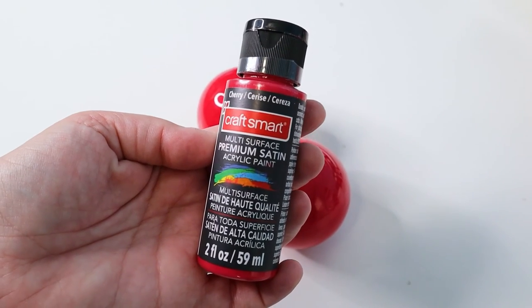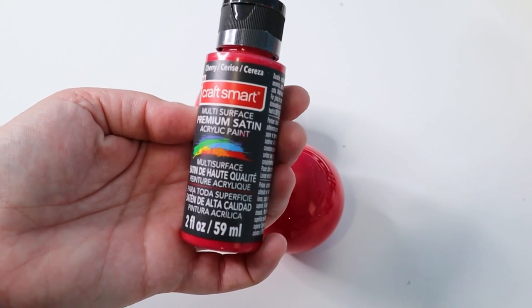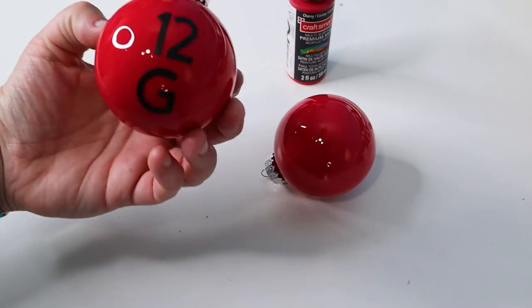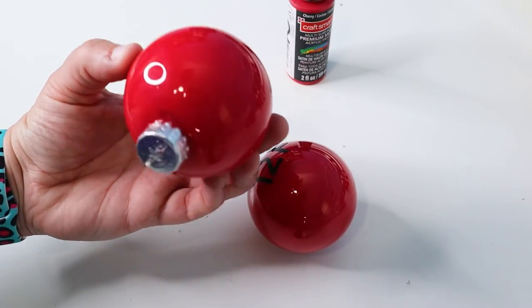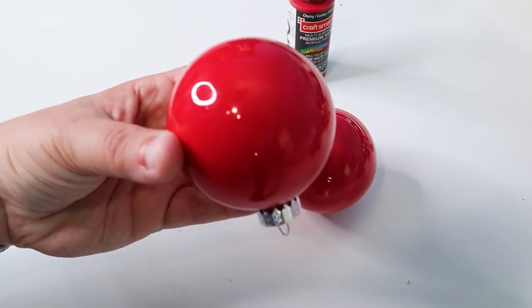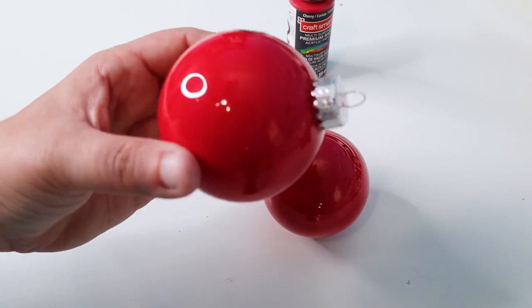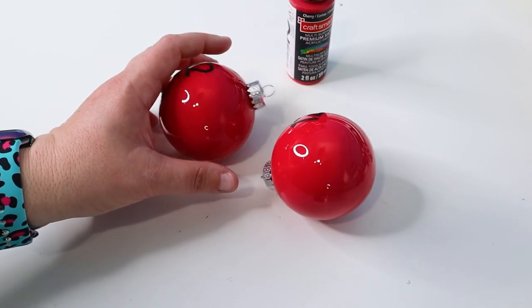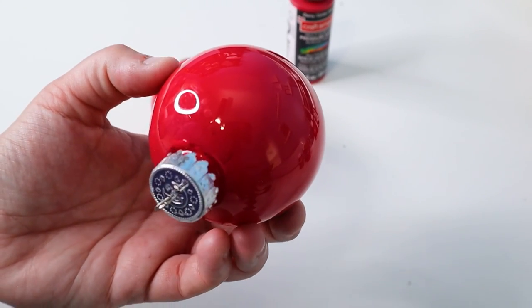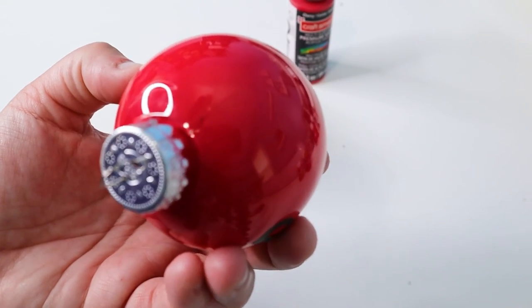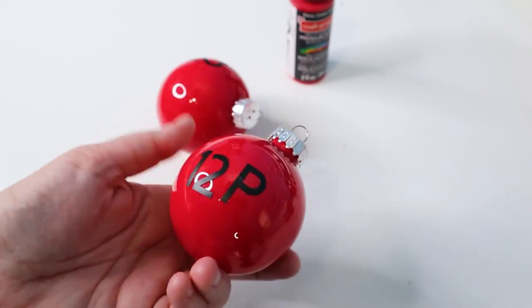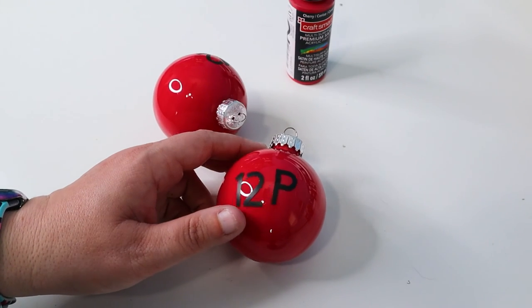And last but not least, we have Craft Smart Multi Surface premium satin acrylic paint in the color cherry. Let's take a look at glass. This one looks well covered. We've got just a tiny, teeny little bit of cracking in the paint, but nothing that would be real noticeable unless you were staring at it. Glass looks really good. Let's take a look at plastic. Plastic's got just a teeny tiny bit right there at the top, but nothing significant as well. So I would say that the Craft Smart would be a good choice as well.